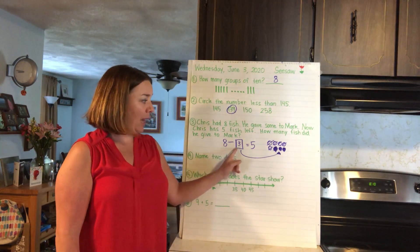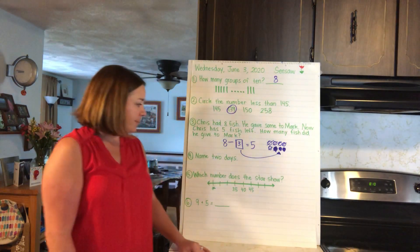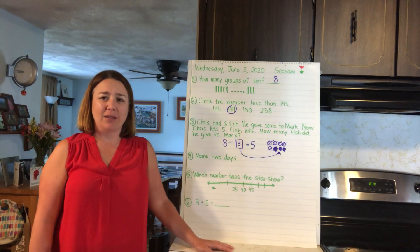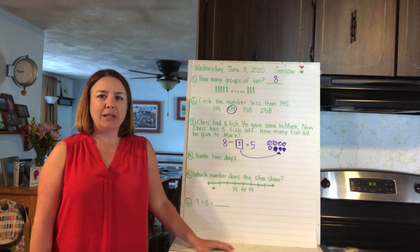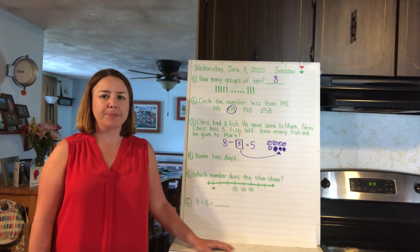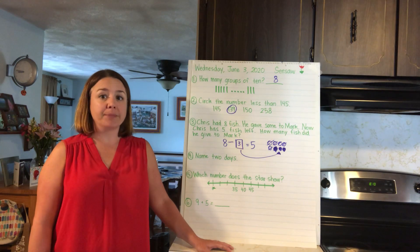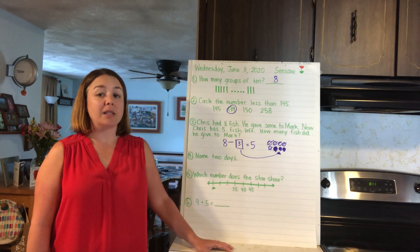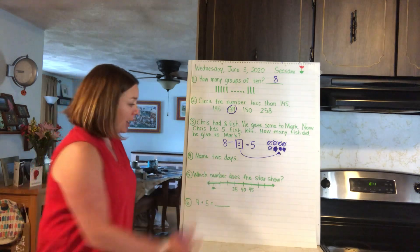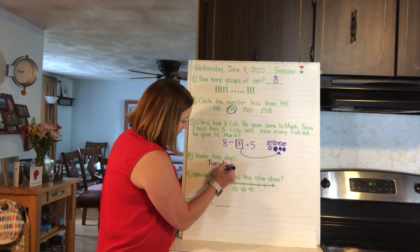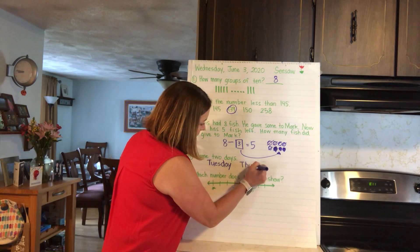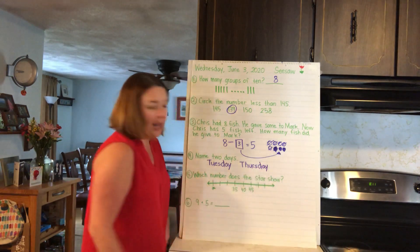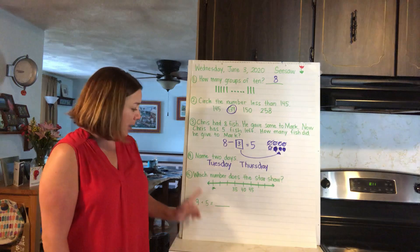So I started with eight, gave three away, and ended up with five left. Number four: name two days — any days you want. Think about all the days of the week and write down two of them. Write them the long way, don't be lazy! Don't forget, days of the week start with a capital letter. The days of the week are Sunday, Monday, Tuesday, Wednesday, Thursday, Friday, and Saturday. I'm going to write Tuesday, but you can write any two days of the week.